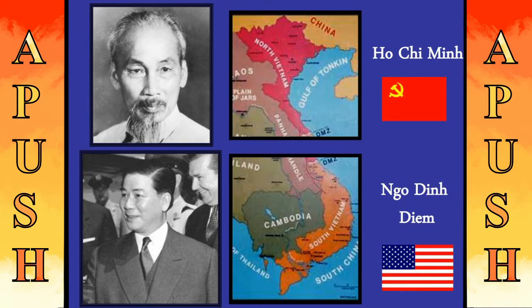Alongside the monetary support, we're also going to see Dulles coming in during this time period, wanting to put into effect something known as the Southeast Asia Treaty Organization, or SEATO, which was essentially an agreement signed saying that the U.S., Great Britain, France, Australia, New Zealand, the Philippines, Thailand, and Pakistan would all work together to make sure that communism would not spread inside of Southeast Asia.